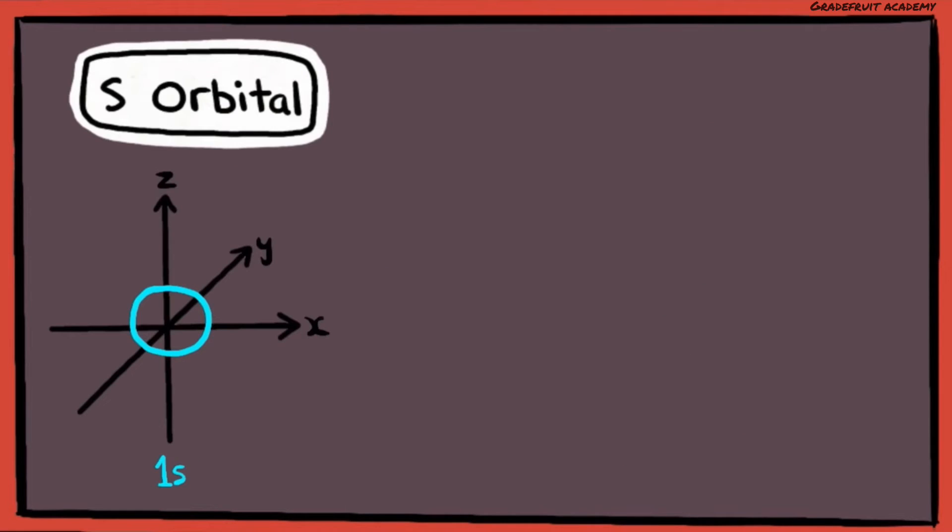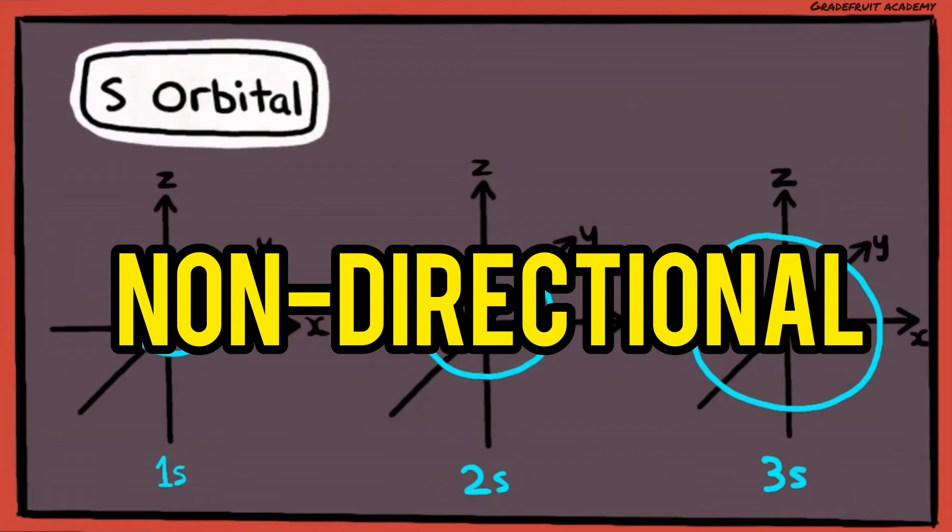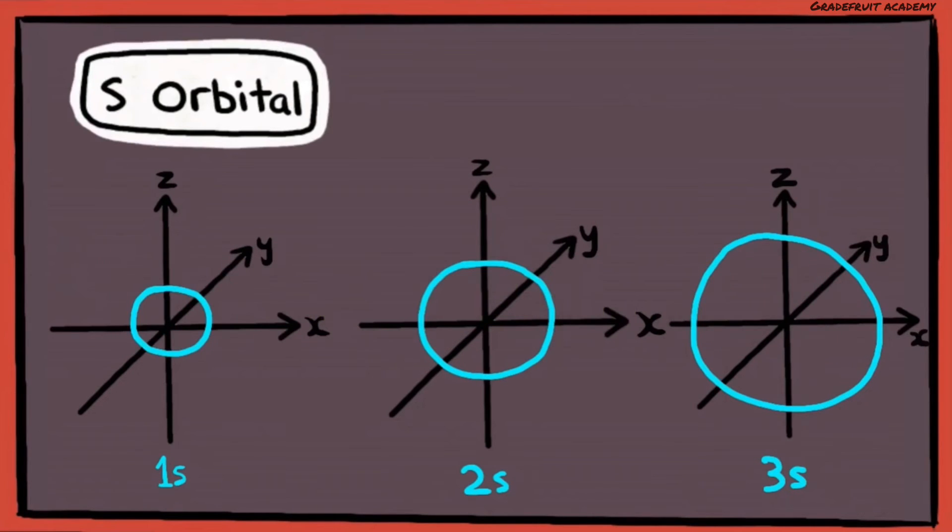The S orbitals in S subshells are spherical in shape. And if they are in a larger principal quantum shell, their size would be larger. And because of their spherical shape, they are considered non-directional as the electron density is not concentrated at any particular direction.